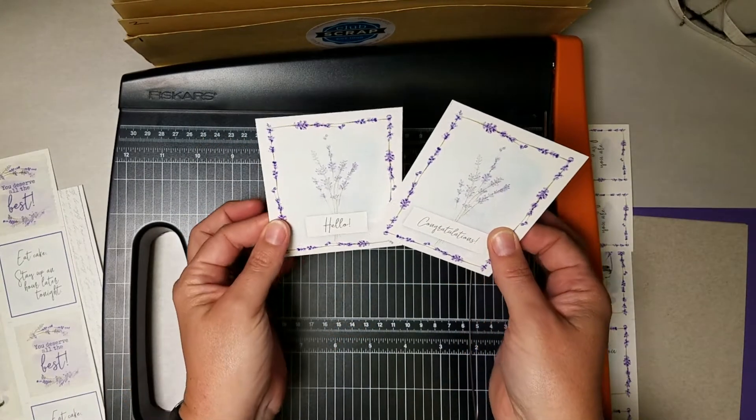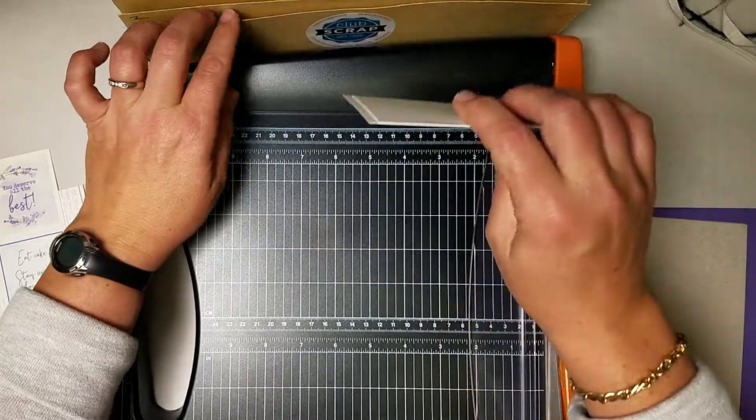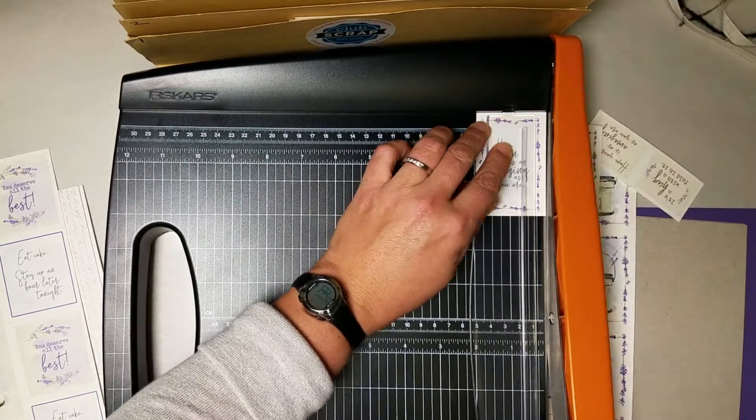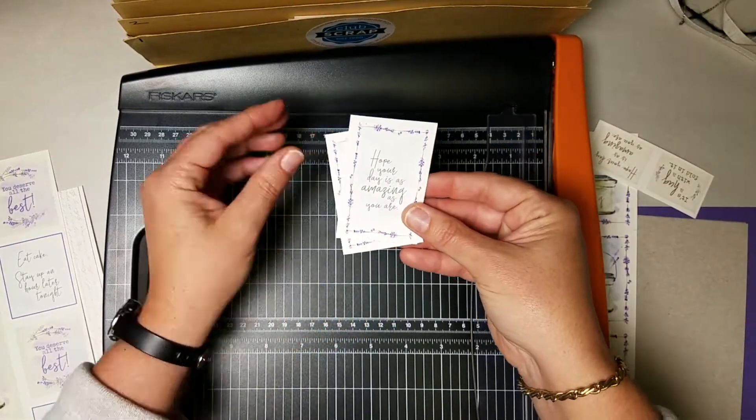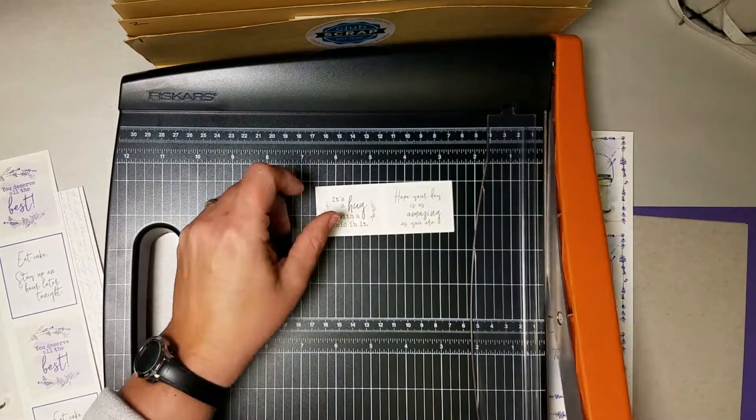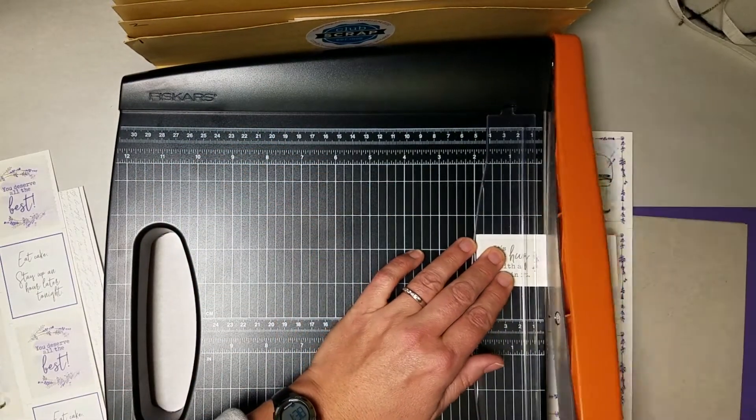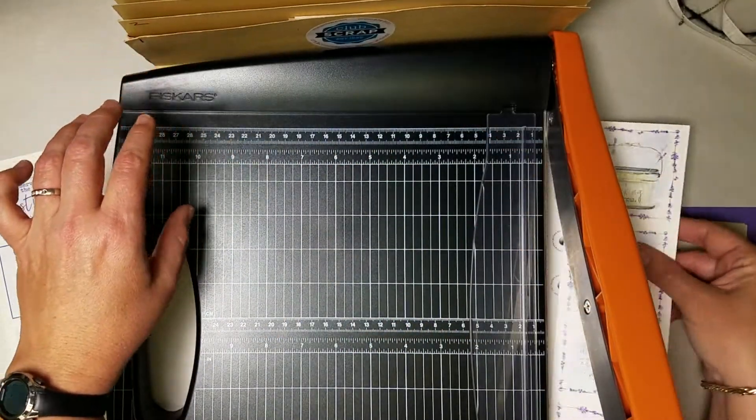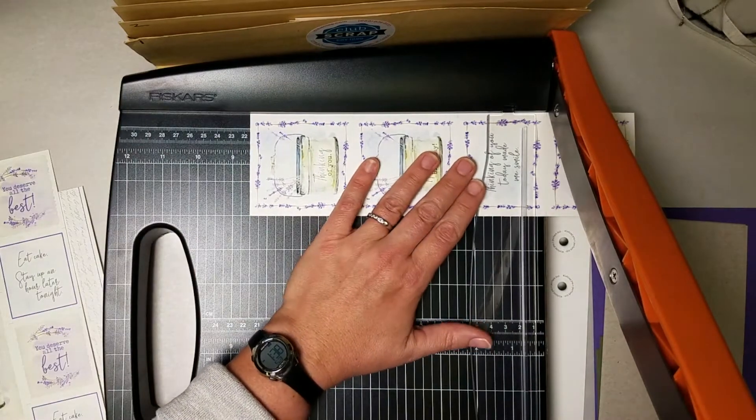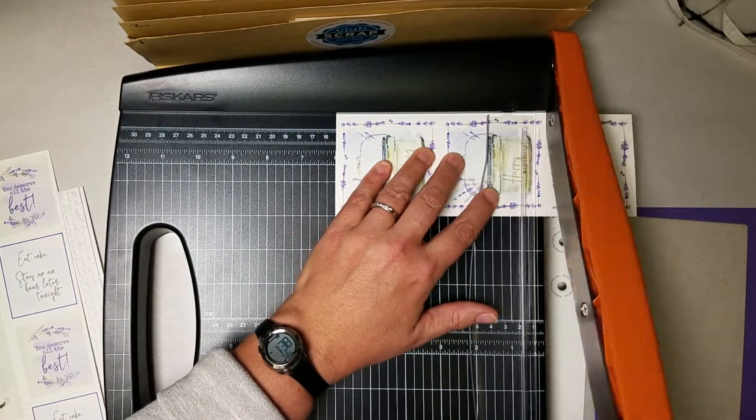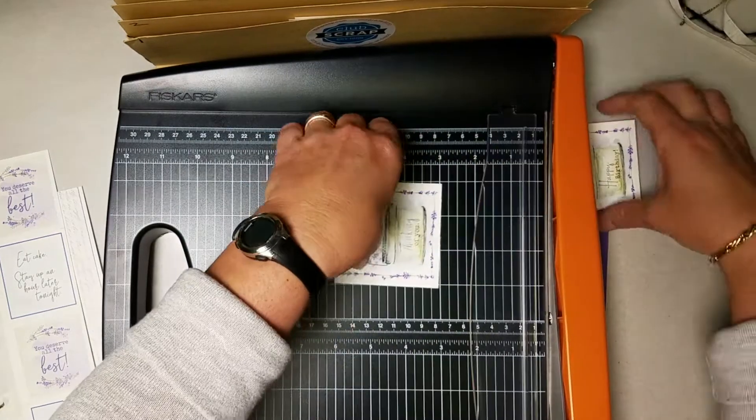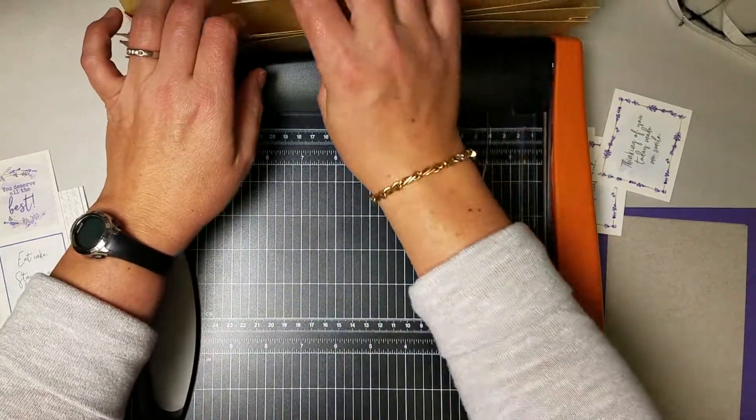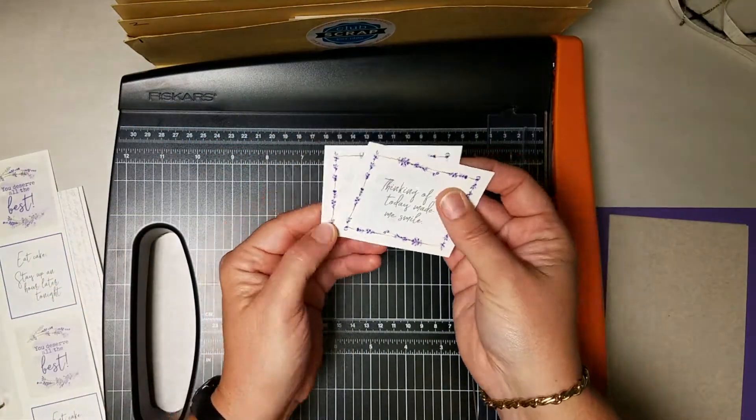These two rectangular panels, hello and congratulations, both go into set A or your first pocket. Then I'm going to separate these two and they both go into pocket C, and these final two pieces also go into pocket C. Then I'll grab the next strip and separate them into four different elements.